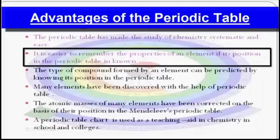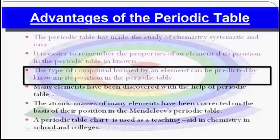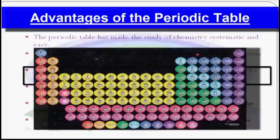The third advantage is that the type of compound formed by an element can be predicted by knowing its position in the periodic table. For example, if an element is on the left side of the periodic table, it will be a metal and will form only ionic compounds. Please refer to the previous video on electronegativity to understand bond formation with respect to metals and non-metals.